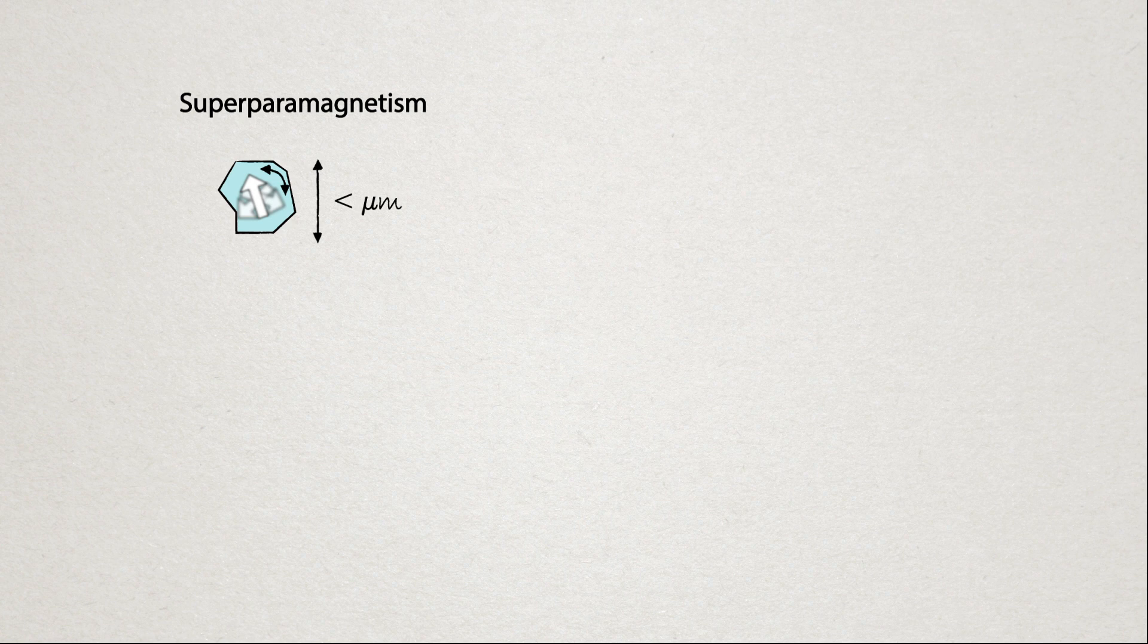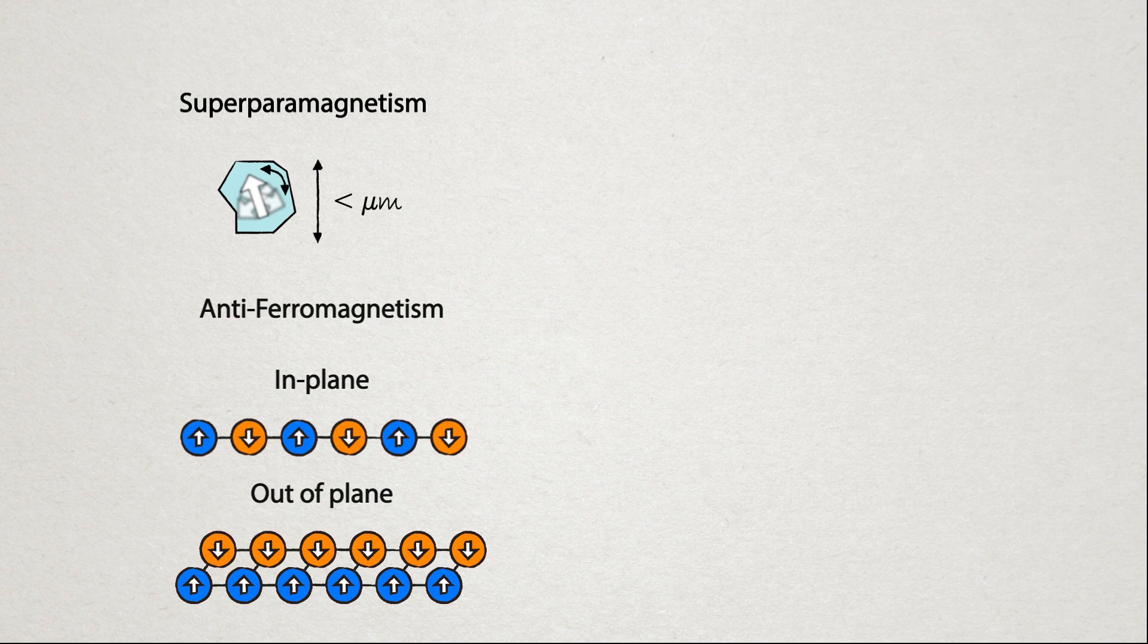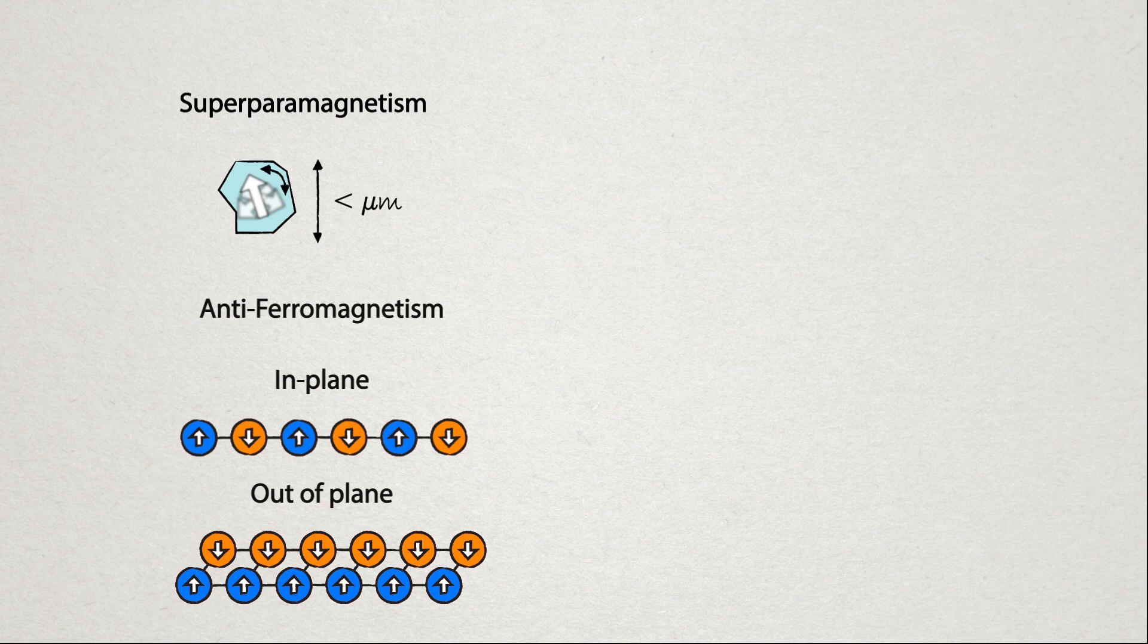Another interesting form of ferromagnetism is anti-ferromagnetism. This is where, rather than the atoms acting together to form domains, they actively work against each other, pointing the opposite direction to one another.